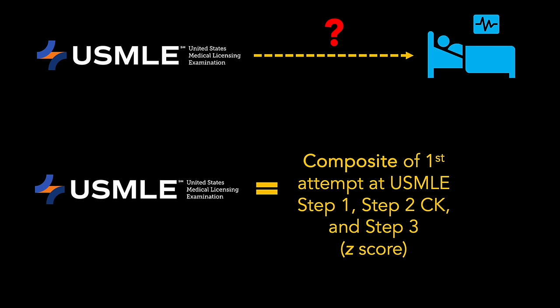So to measure USMLE performance, the authors created a composite measure that averaged the performance on the doctor's first attempt at the USMLE Step 1, Step 2CK, and Step 3 examinations. So instead of having to do math with three different numbers, now we just have one. And that number is actually a Z-score that expresses how far from the overall mean of performance that doctor's Step 1, Step 2, and Step 3 scores were.